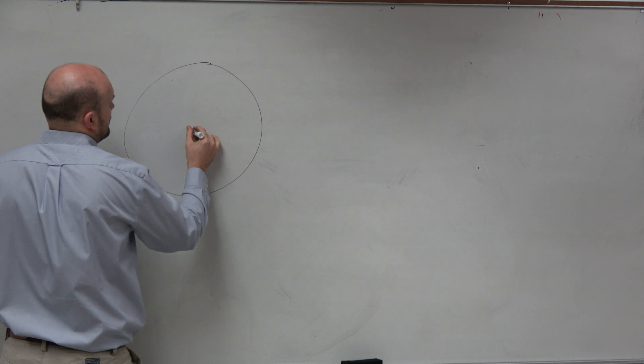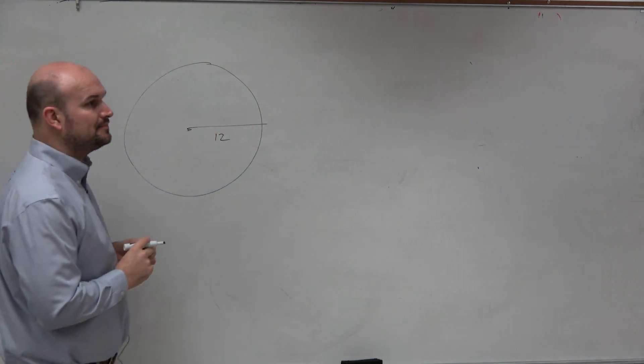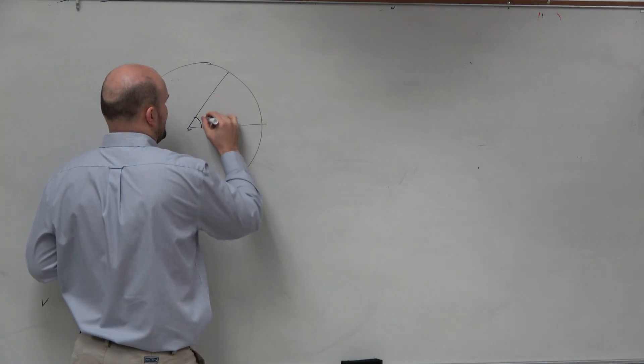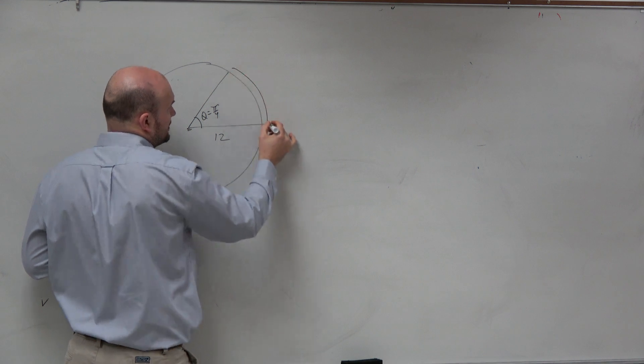The question says you have a circle with a radius of 12 meters, and you want to find the arc made with the central angle at pi over 4. So we have our angle theta equals pi over 4, and they want to measure the arc.